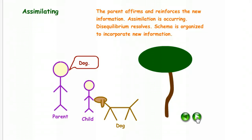The parent responds, dog. So the parent affirms and reinforces the new information. Assimilation is occurring. The disequilibrium resolves. The schema is organized to incorporate that new information.